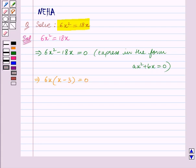So after factorizing, we have got these two factors of the given equation. This implies 6x is equal to 0 or x minus 3 is equal to 0.